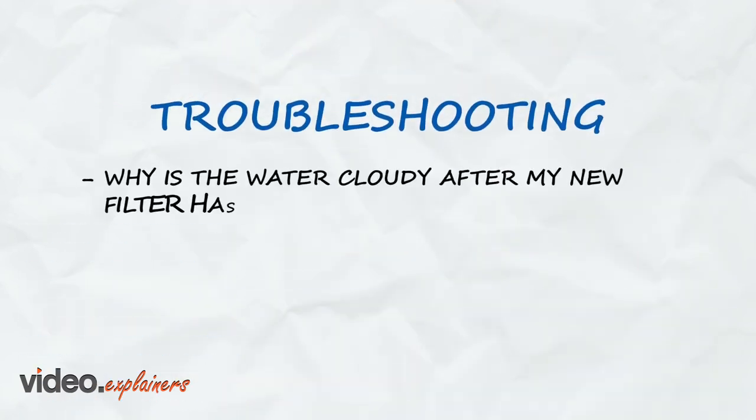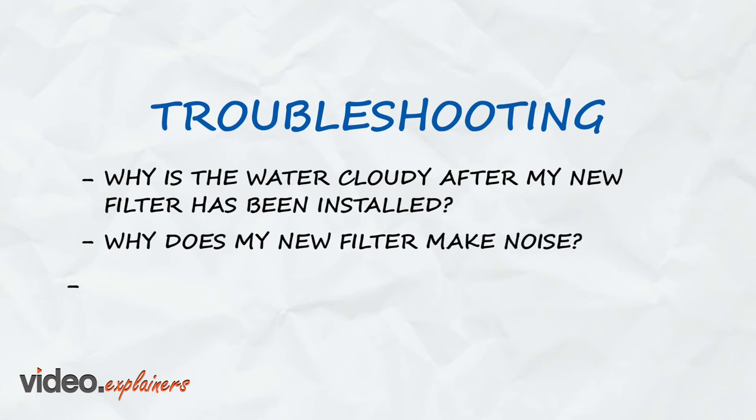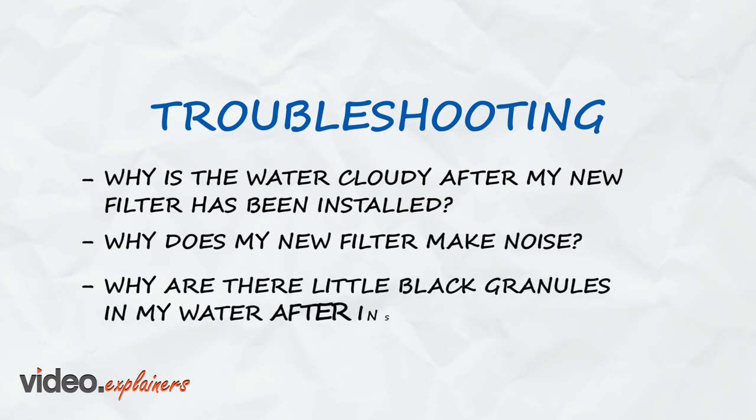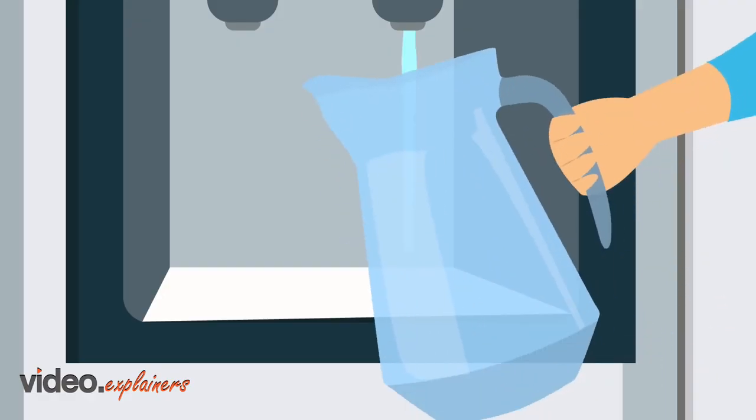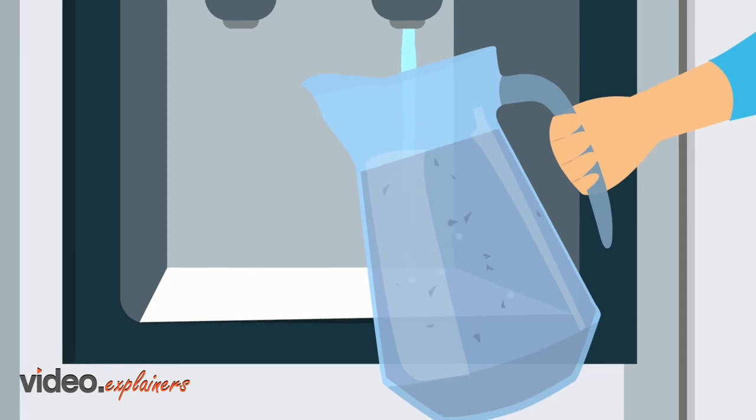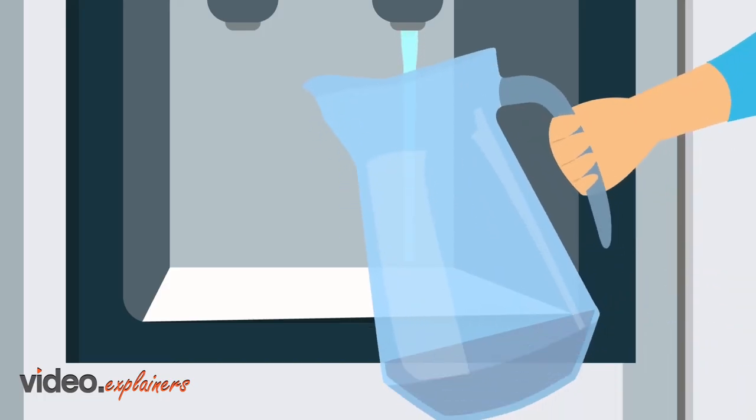Why is the water cloudy after my new filter has been installed? Why does my new filter make noise? Why are there little black granules in my water after installing a new filter? All of these problems are solved by running 2 to 3 gallons of water through the dispenser. The cloudiness is caused by tiny air bubbles, the noise is caused by air pockets, and the black granules are tiny pieces of carbon. Running water through the dispenser will flush out the air pockets, air bubbles, and any loose carbon particles from the filter.